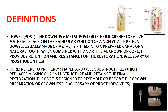The post is also known as a dowel. A dowel is a metal post or any other rigid restorative material placed into the radicular portion of a non-vital tooth. It is placed into the root portion and is made up of metal because this portion must be rigid enough to support the crown structure. It is fitted into a prepared canal of the natural tooth - the gutta-percha from obturation is removed, leaving around 3 to 4 mm in the apical portion, and the canal is prepared to place the post. Combined with an artificial crown or core, it provides retention and resistance for the restoration. This definition is given by the Glossary of Prosthodontics.